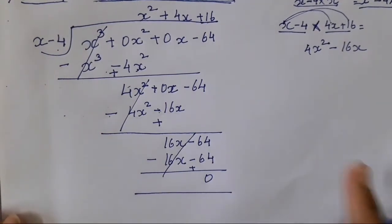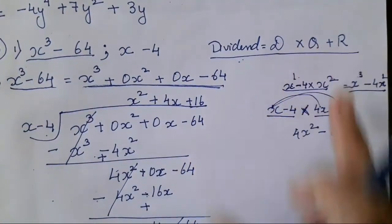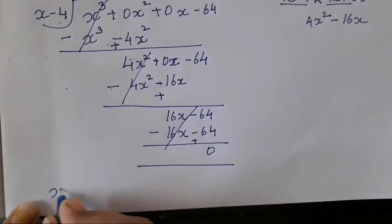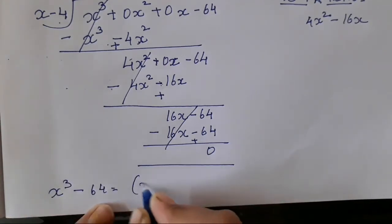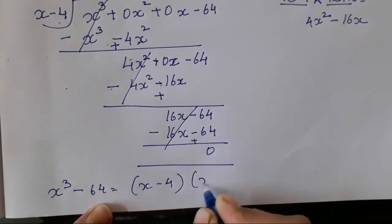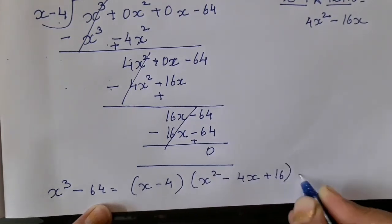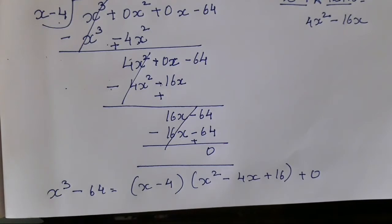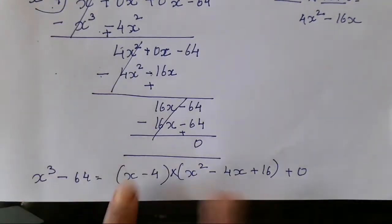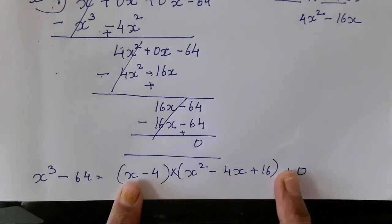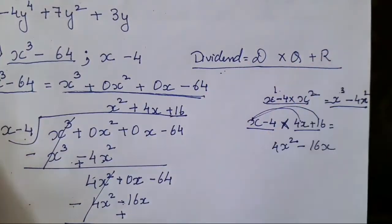Now write the answer in the required form: dividend equals divisor into quotient plus remainder. So x³ minus 64 equals x minus 4 into x² plus 4x plus 16 plus 0. The multiplication sign is there between divisor and quotient. This equation is written using the given terms.